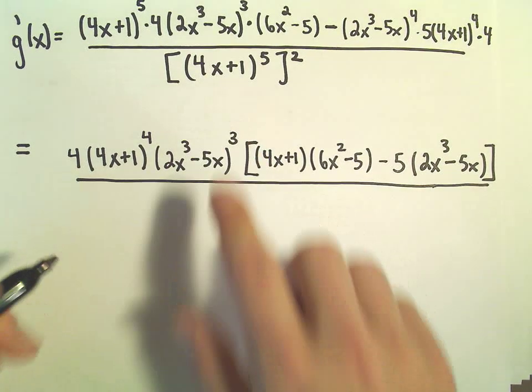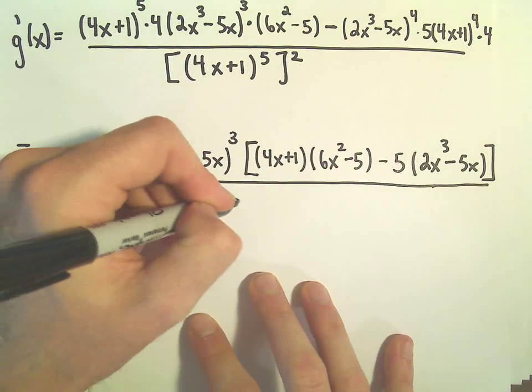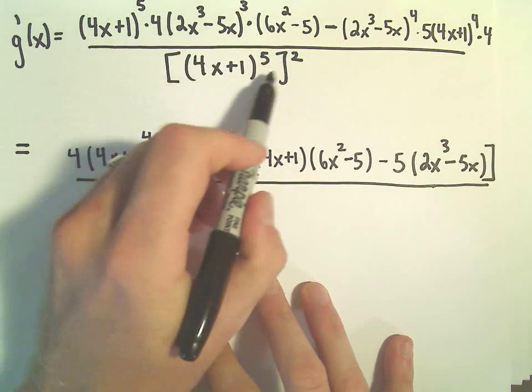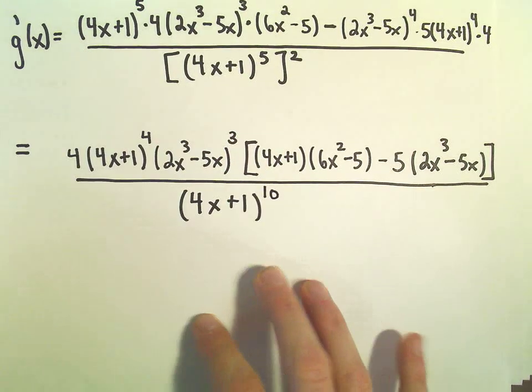And now in the denominator, we would just have 4x plus 1. If we multiply the exponents, that'll give us to the 10th power.